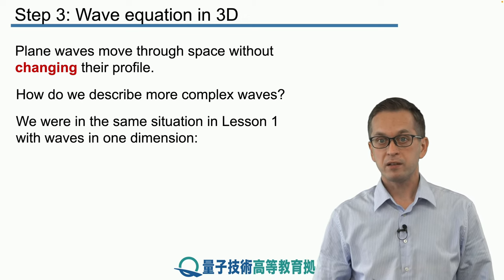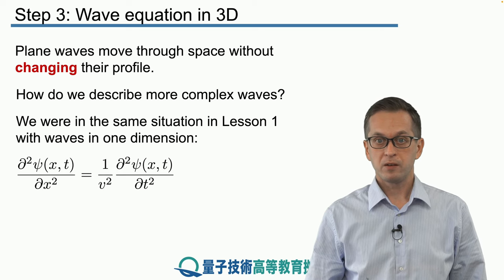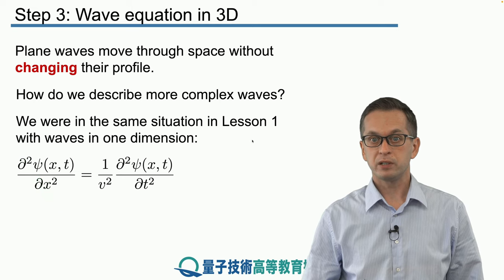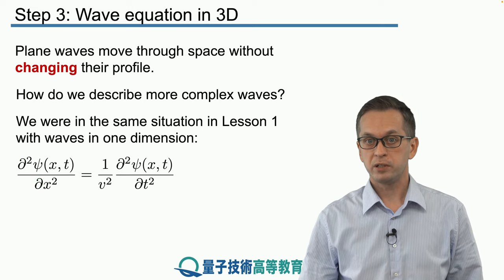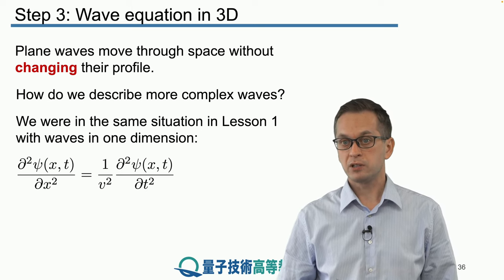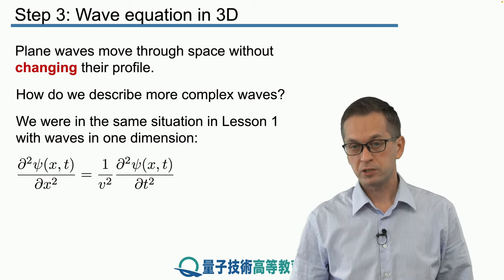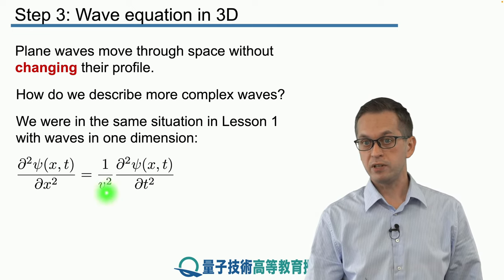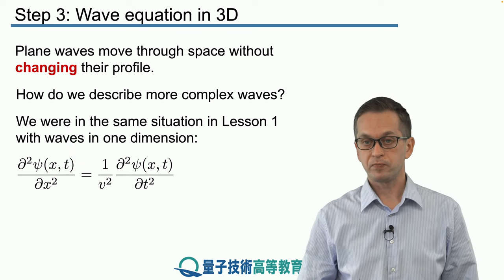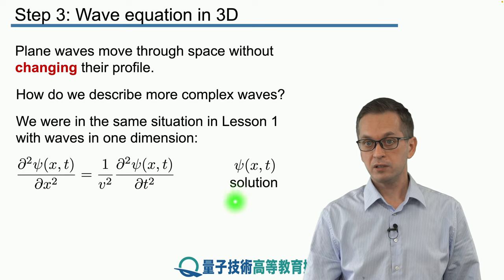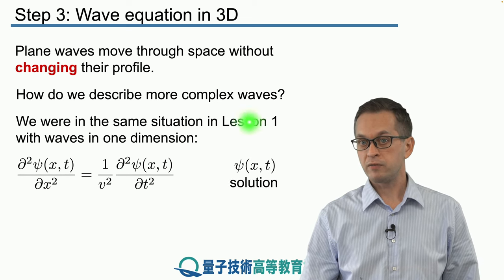In the first lesson we had the following wave equation where we had psi, our wave function, and we took the second-order partial derivative with respect to space, and we said it is equal to the second-order partial derivative with respect to time, rescaled by the factor of one over v squared, where v is the phase velocity of the wave. Any solution that satisfied this equation was a valid wave in one dimension.